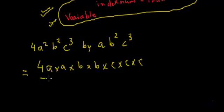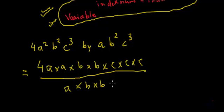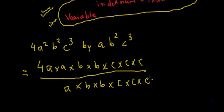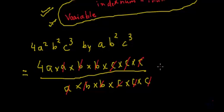In the denominator we will have a multiplied by b multiplied by b, and then 3 c's: c multiplied by c multiplied by c. Now let's solve it further. This c will get cancelled with this c, and this c will get cancelled with this c. Then b cancels this b, and this b cancels this b, and a cancels this a. So we are left with 4a.